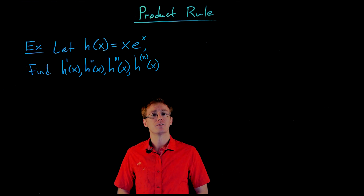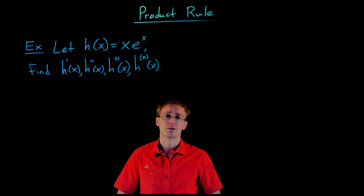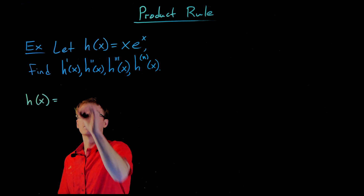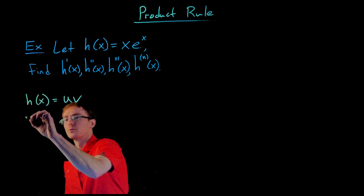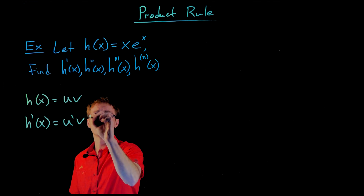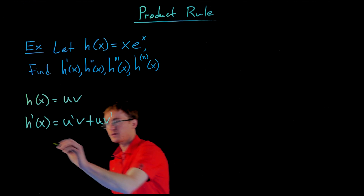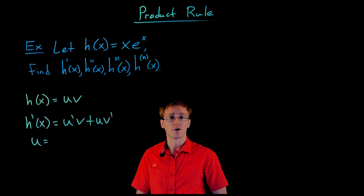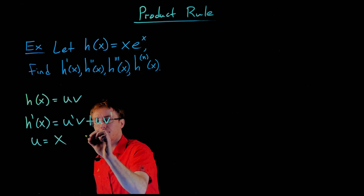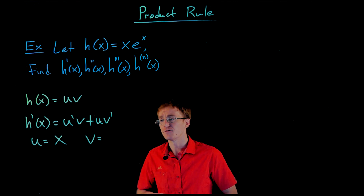Our function is x times the natural exponential function. Since we have multiplication here we're going to use the product rule to differentiate. We'll think of h of x as the product of two functions u and v. Our product rule says the derivative of h of x is the derivative of the first function times the second, plus the first function times the derivative of the second. So u is our first function, x, and v is our second function, e to the x.